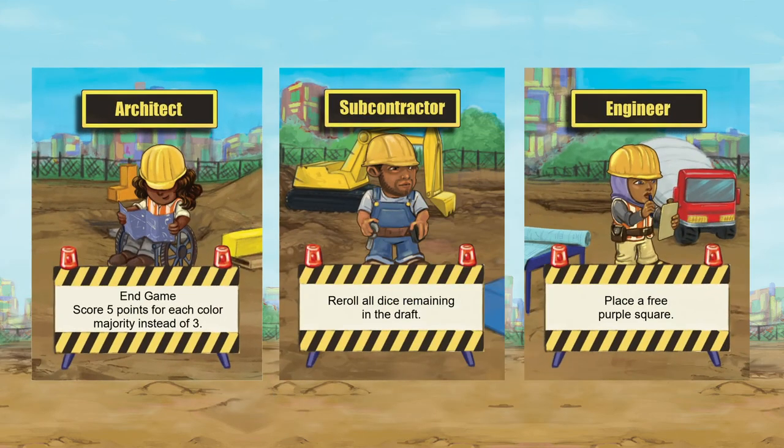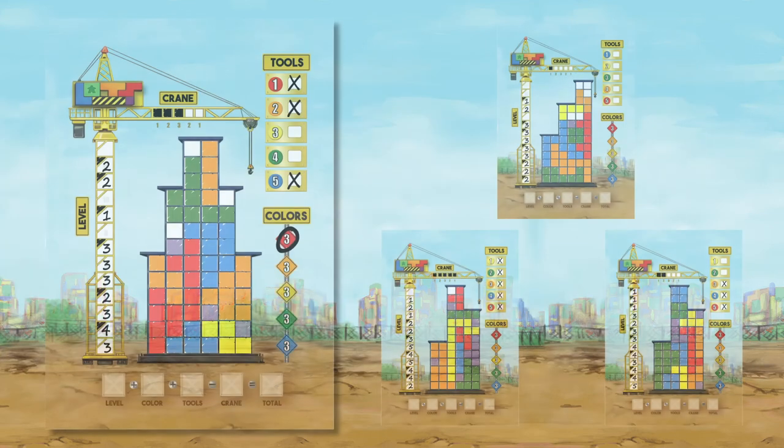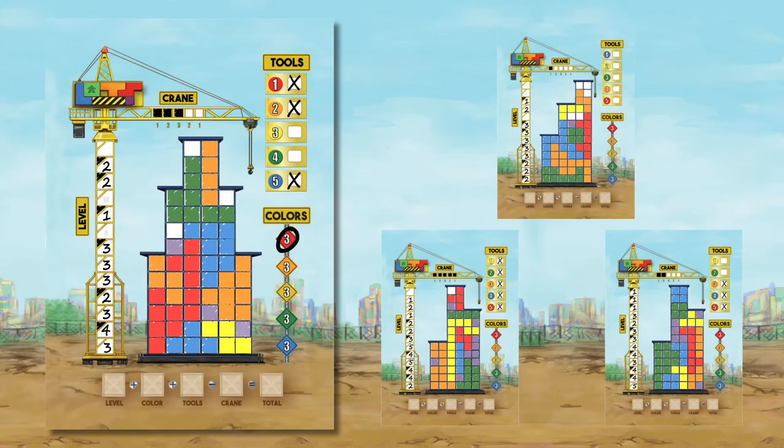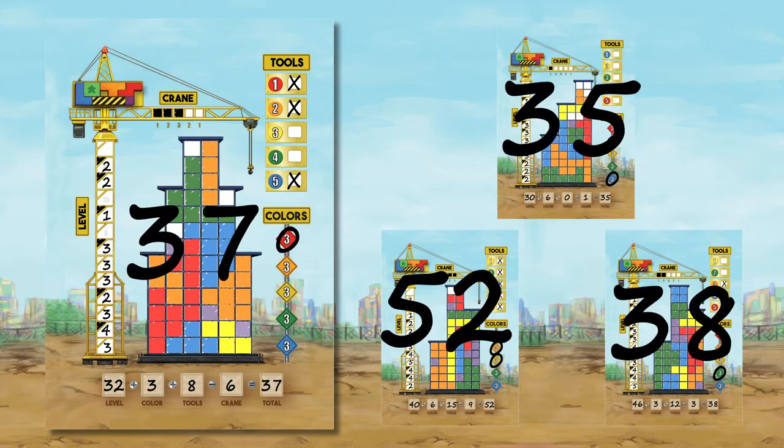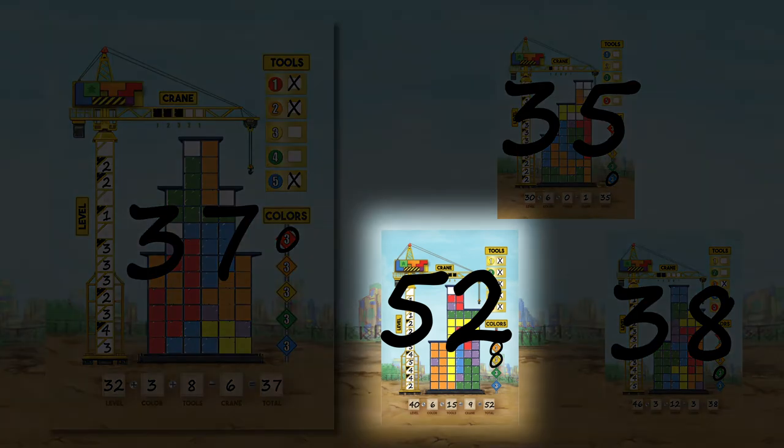And a quick reminder, as for your crew cards, reveal them at the appropriate time if you want to use them. They all have unique and different effects and some will earn you some points. When the game ends, all players tally up their points in levels, tools, colors, and purple boxes used. The player with the most points wins the game.